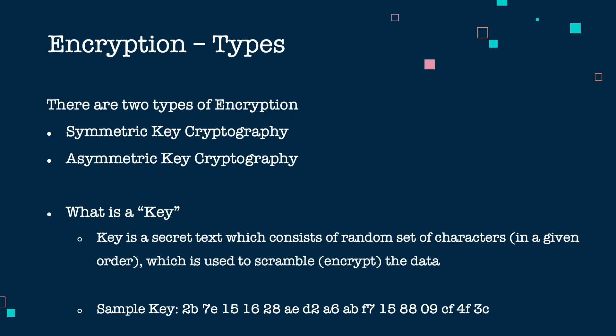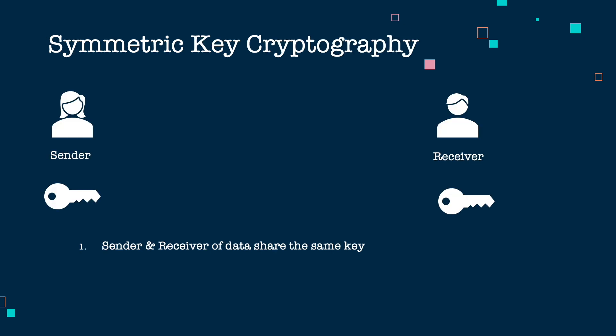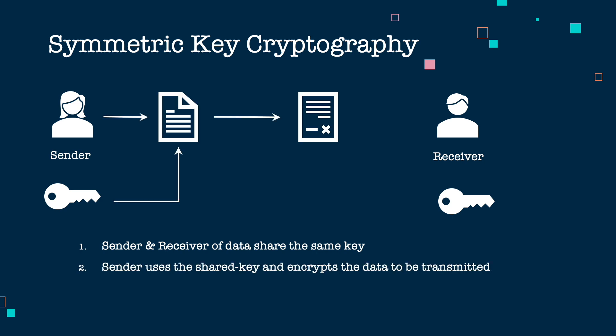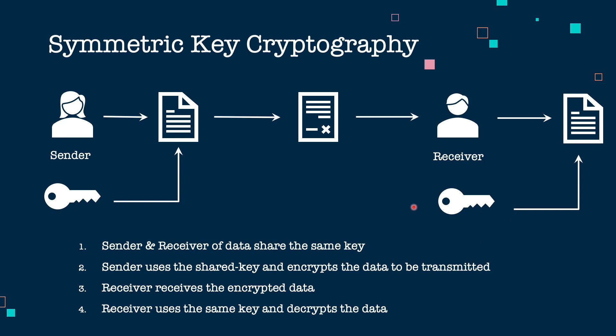Symmetric key cryptography means that the sender and the receiver both share the same key. The sender encrypts the data using the shared key and creates a ciphertext, which is transmitted to the receiver. The receiver then uses this same shared key to restore the original data from the ciphertext. This process is called symmetric key cryptography.